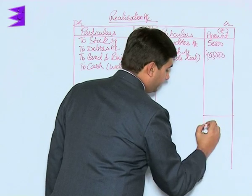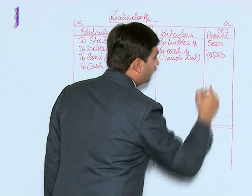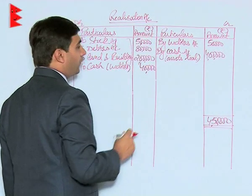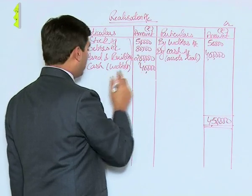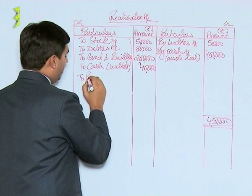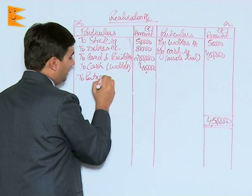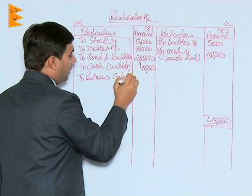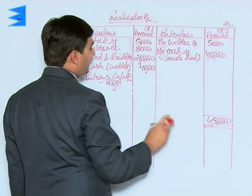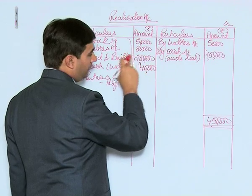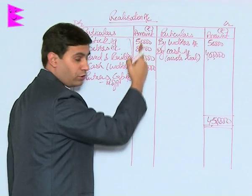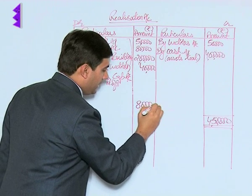Now we total out the realization account and find the profit or loss. The total of the credit side is higher at ₹4,50,000. Deducting the total on the debit side — ₹80,000 plus ₹3,70,000 — we get a profit of ₹80,000, which is transferred to the partners' capital accounts.